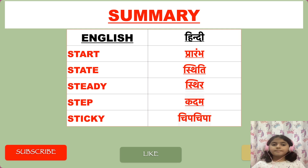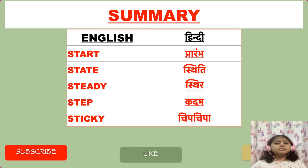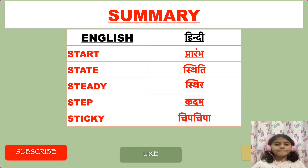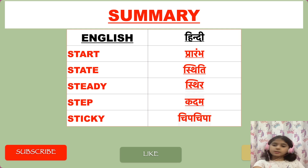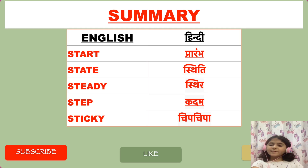Let's revise the words we learned today in English and Hindi. Start – prarambh. State – sthiti. Steady – sthir. Step – kadam. Sticky – chip-chipa. Please like, share and subscribe to our videos for more videos like this. Bye, thank you for watching.